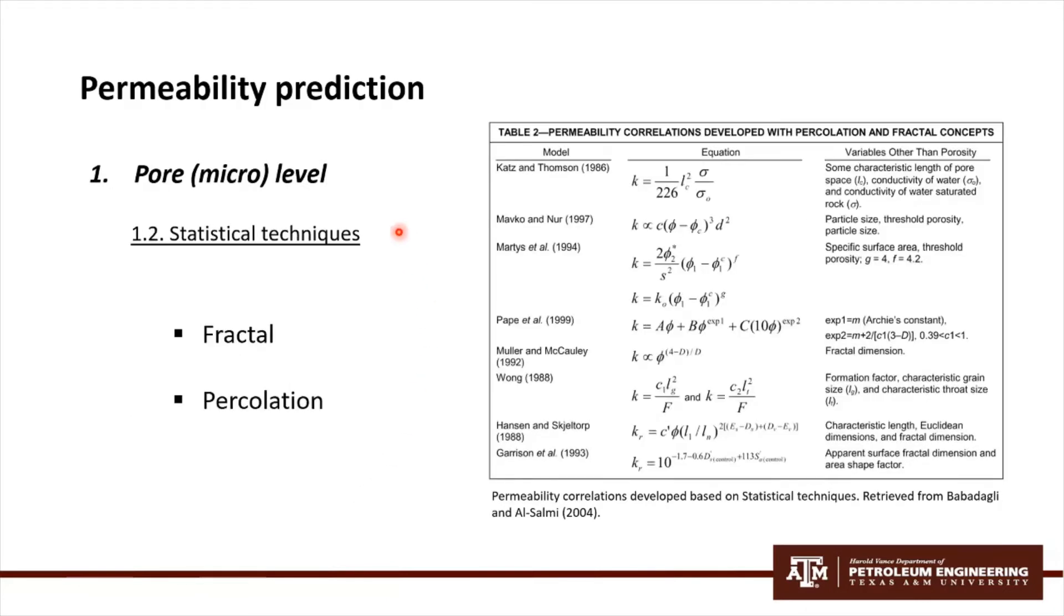For the statistical techniques, there are two major methodologies that associate the microscopic properties of the rock with permeability. One of them is fractal, and the other one is percolation. The different fractal and percolation correlations are here listed in this table, where again you have the model, the equations, and all the variables that are associated with the equation.